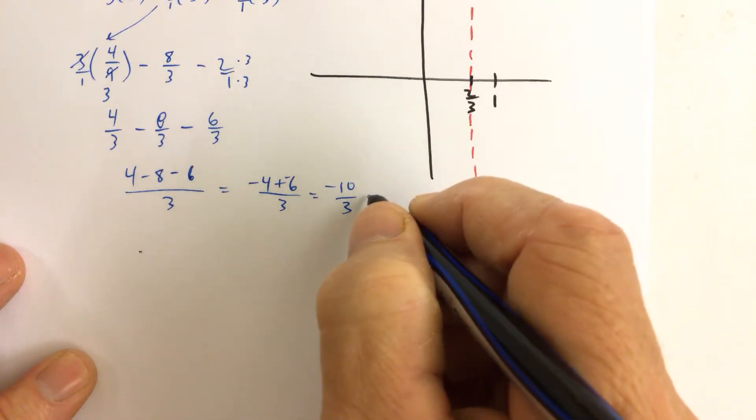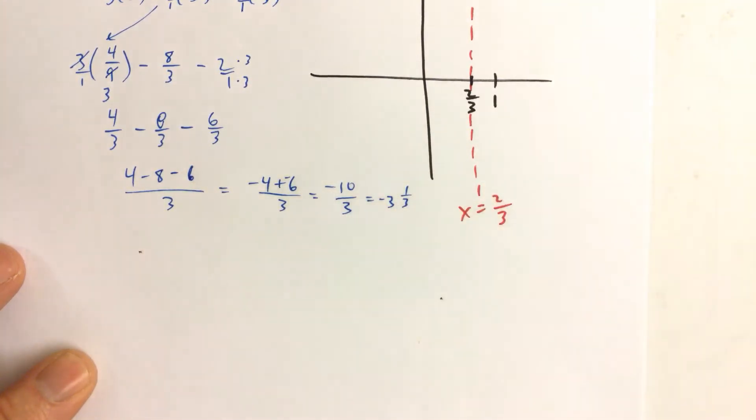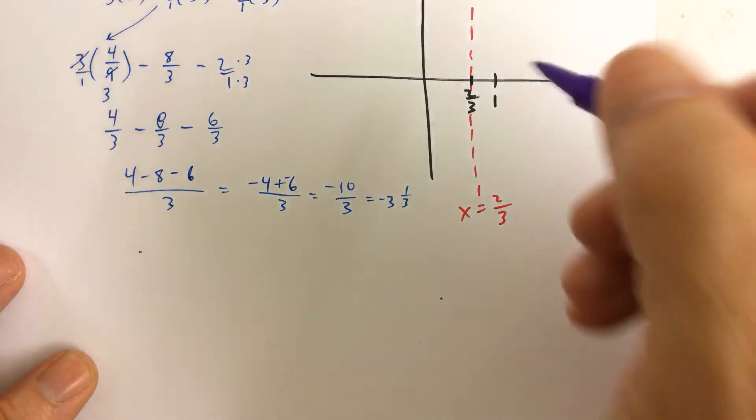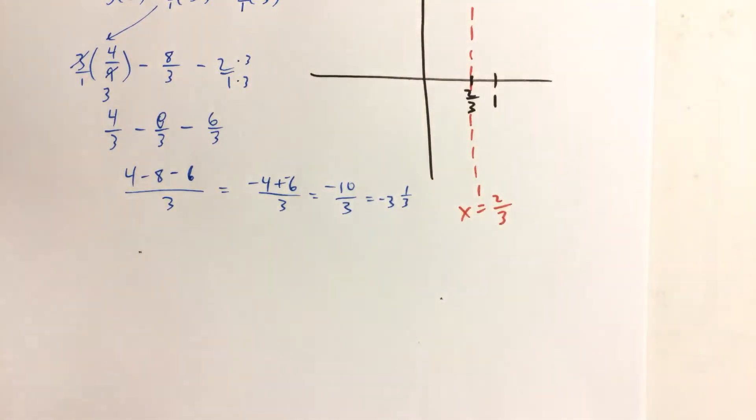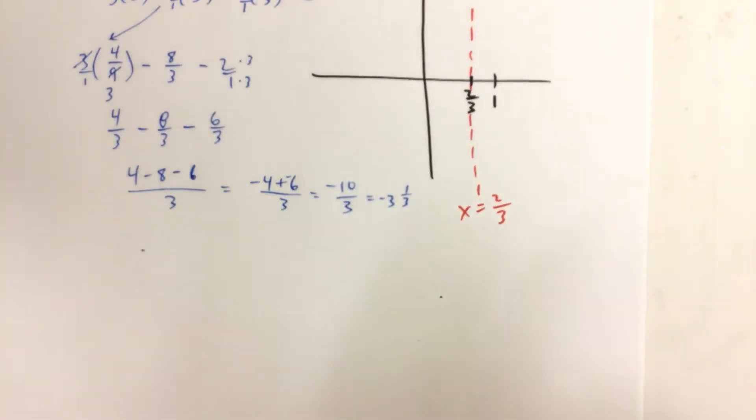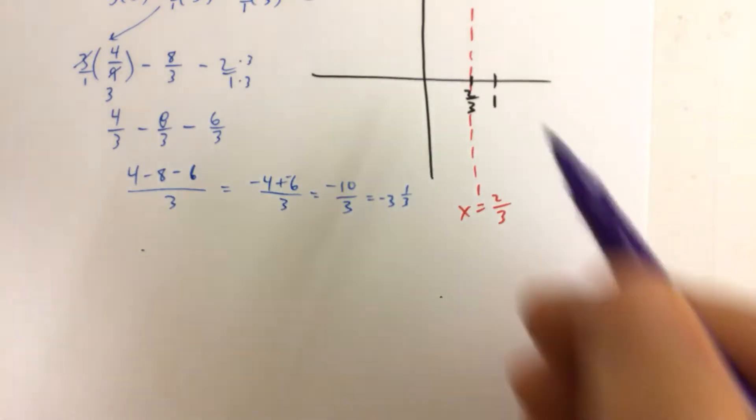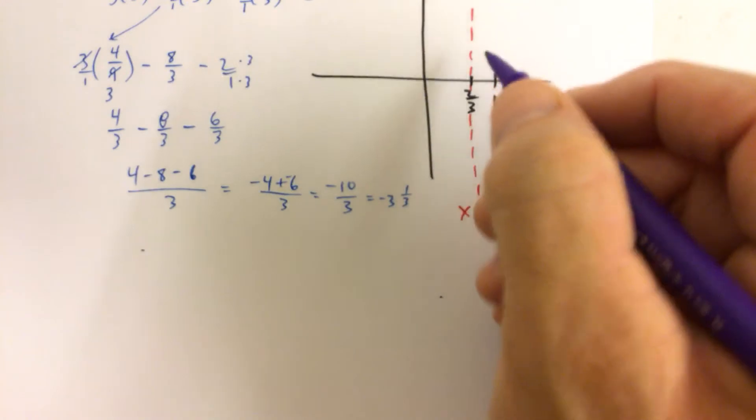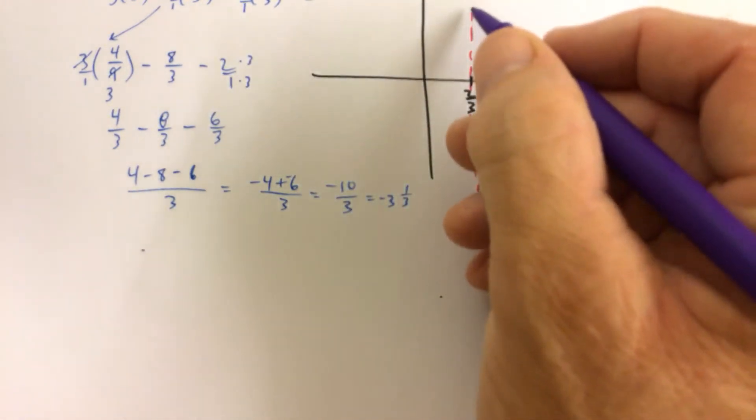Which is negative 3 and 1 third. But when we're drawing the parabola, plotting the vertex, that's the beauty of not having graph paper. Is that you can just plot the 2 thirds. You decide where 2 thirds is going to be.